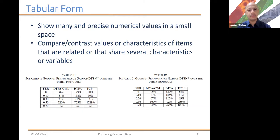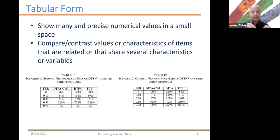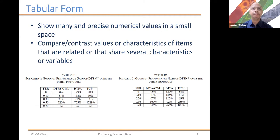Secondly, using tabular form: when there's a need to show many and precise numerical values in a small space, it's preferable to use a table, as opposed to using a graphical form or a figure. When you use tabular form, you use text organized in rows and columns, and you can specify very exact values. You can also use this to compare and contrast the values or characteristics of different items — they could be different quantities. For example, you could be comparing temperature and humidity in one table.